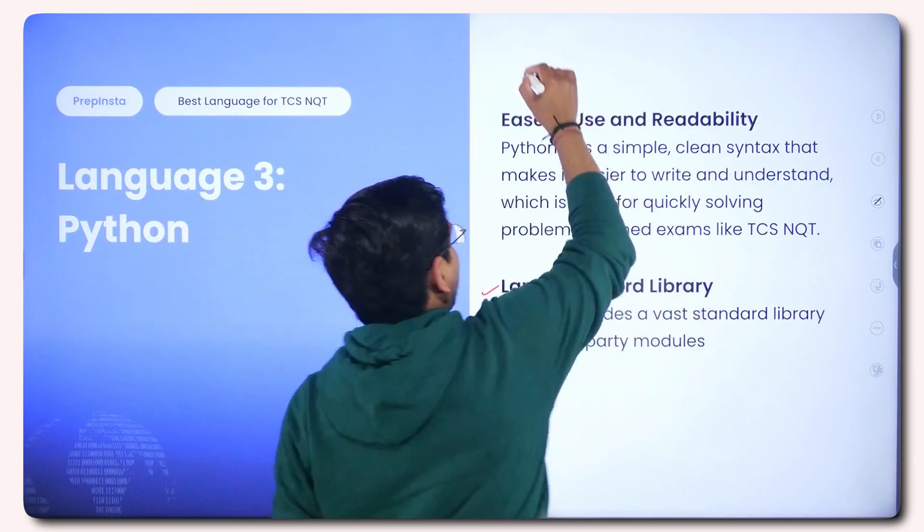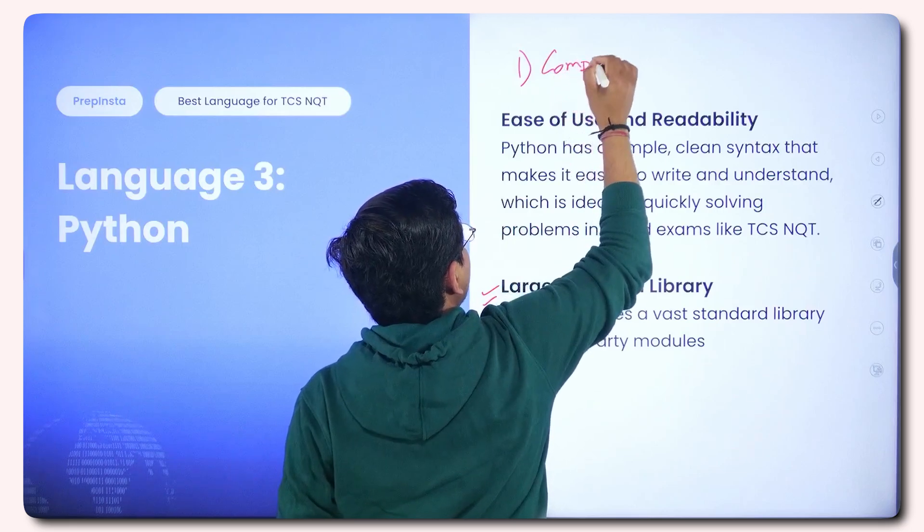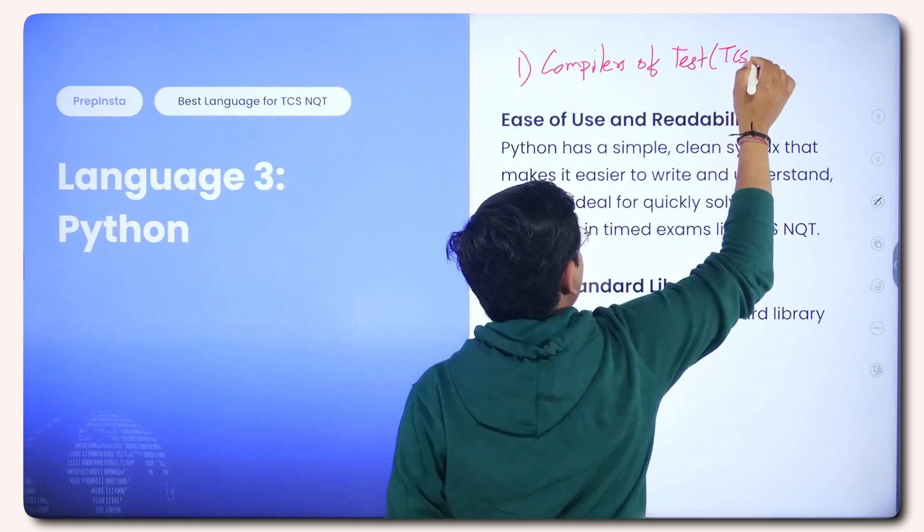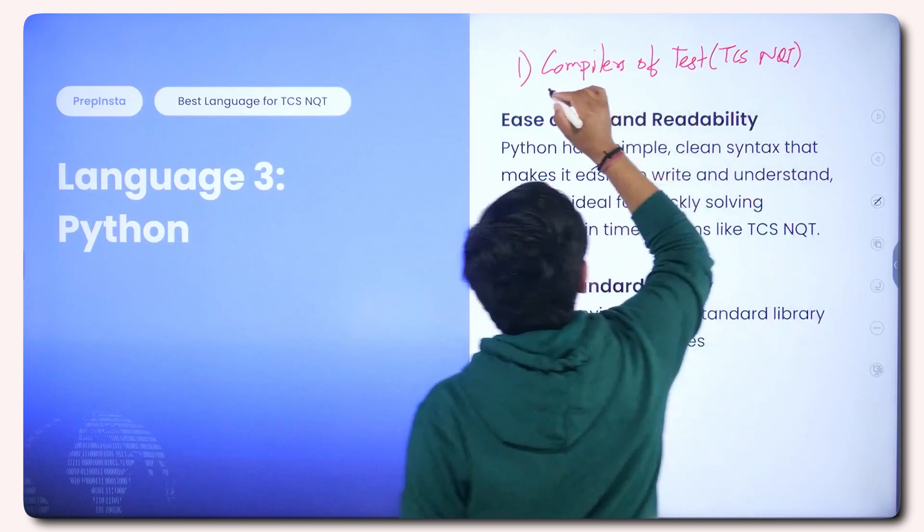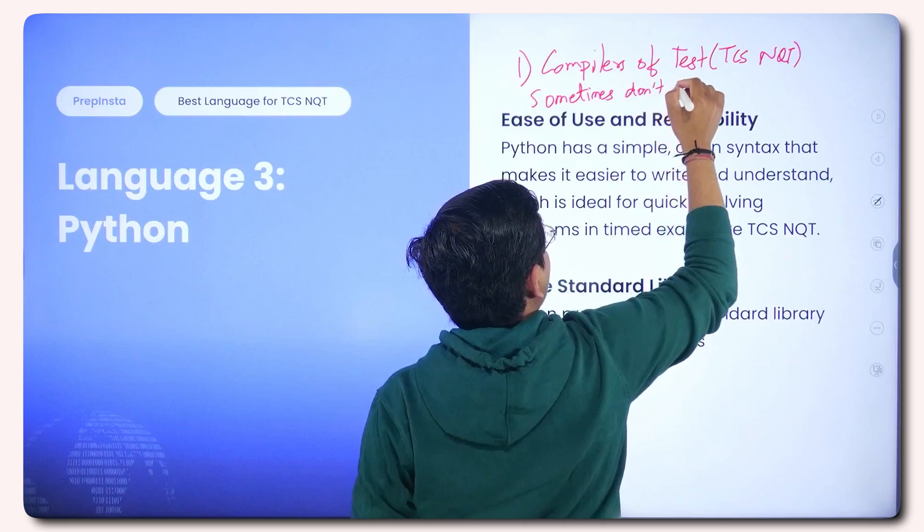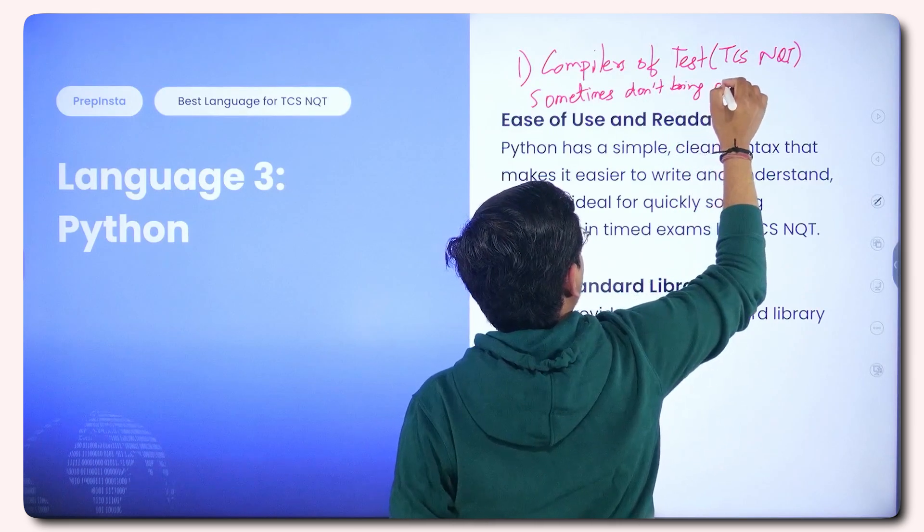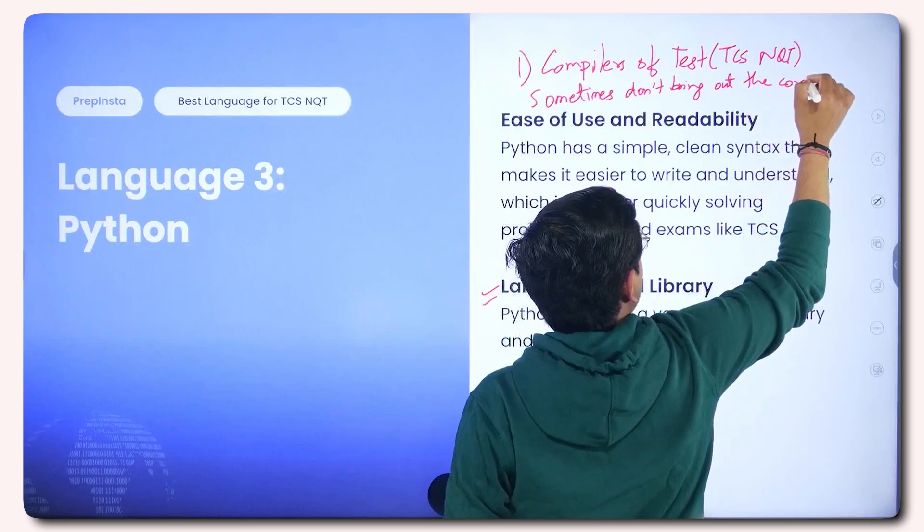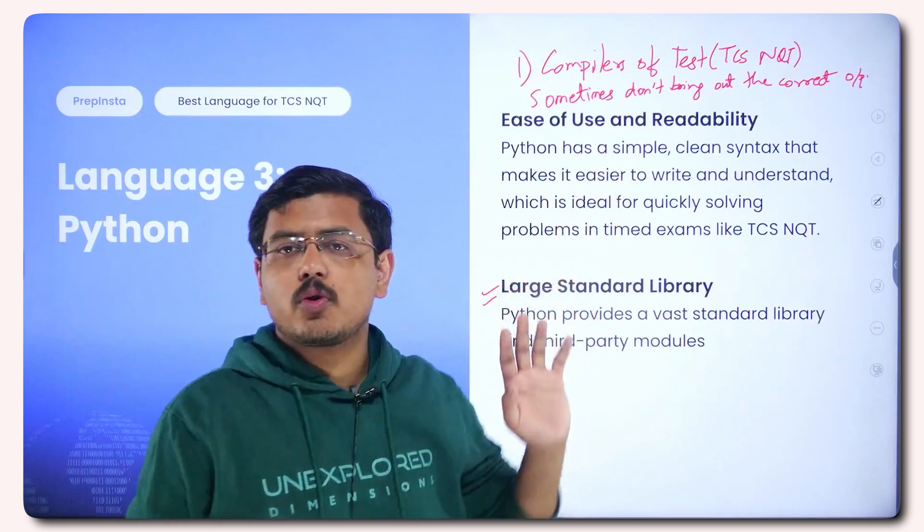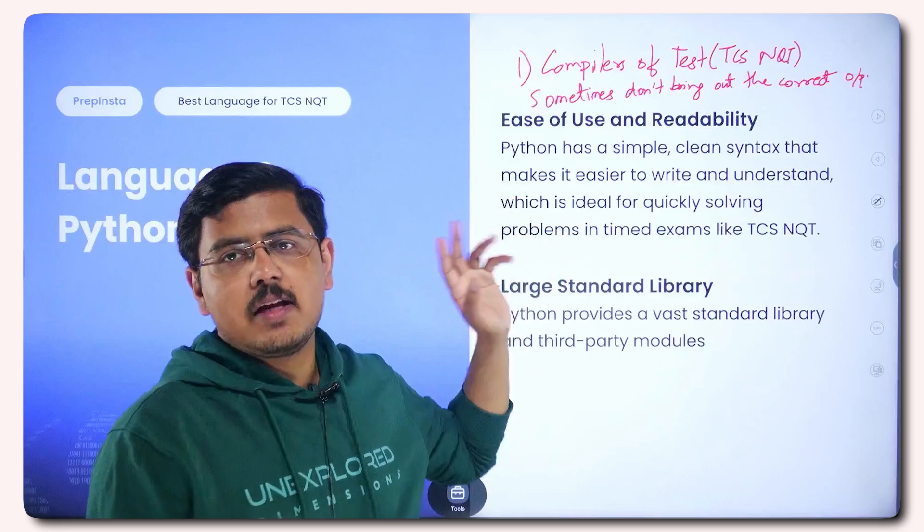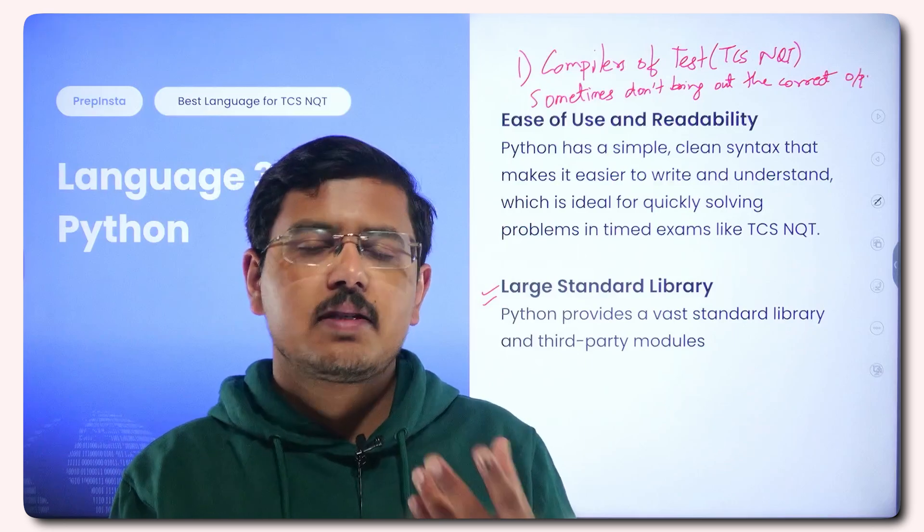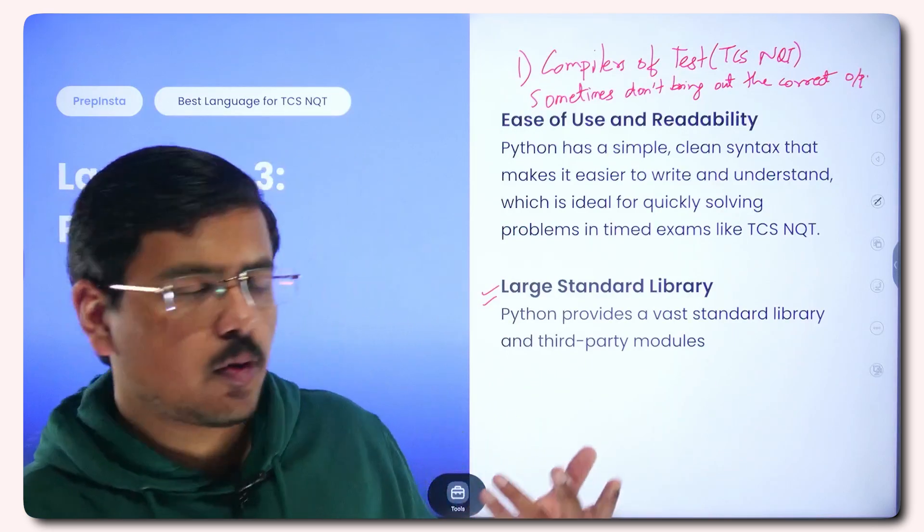But now there is a drawback in this. Compilers of TCS NQT sometimes don't bring out the correct output, and it is not from your end, your problem is not there. Somebody can write the absolute correct code and then receive an incorrect output from the compilers of various tests. Why so? Sometimes the indentation is different, sometimes there is a basic difference in the version of Python that is being supported. So a lot of times such minor misses happen in the exam.